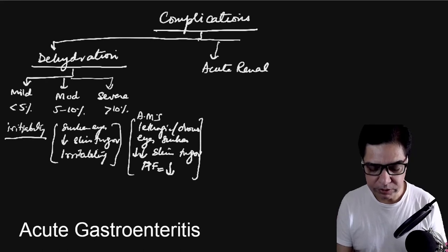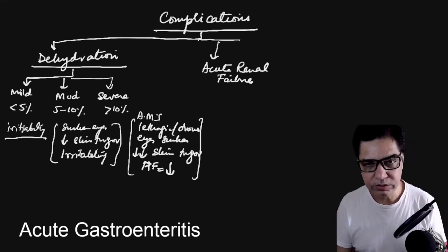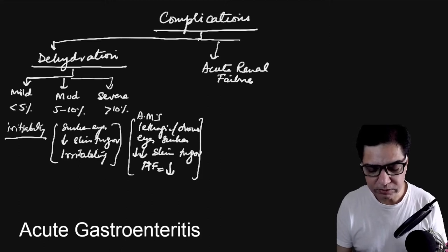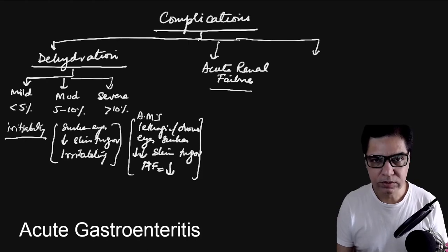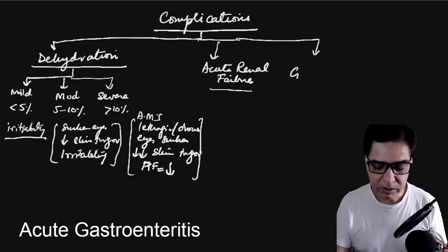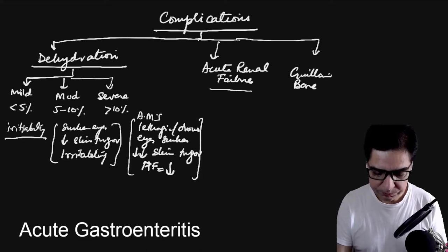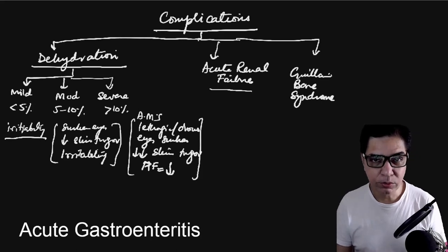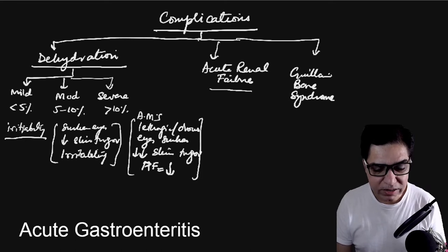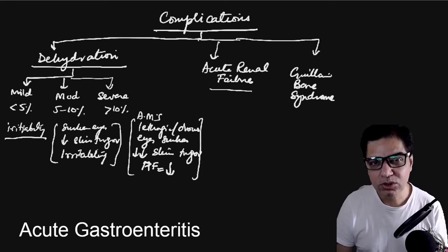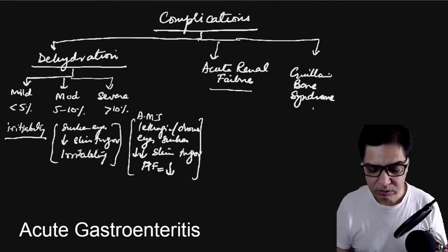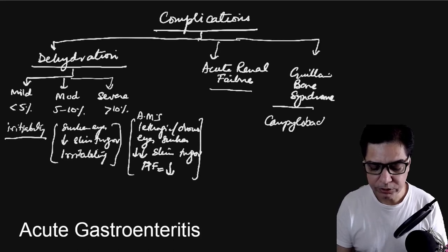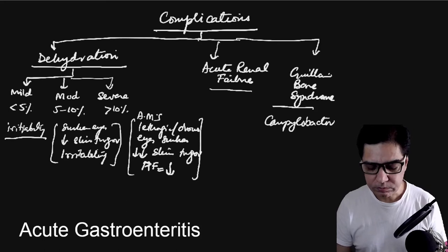Due to dehydration, children can develop acute renal failure — a pre-renal type of acute kidney injury caused by decreased renal perfusion, leading to reduced urinary output. Another rare complication is Guillain-Barré syndrome, an ascending polyneuropathy caused by immunological mechanisms, occurring days after gastroenteritis. Campylobacter is the most common pathogen implicated in post-gastroenteritis Guillain-Barré syndrome.